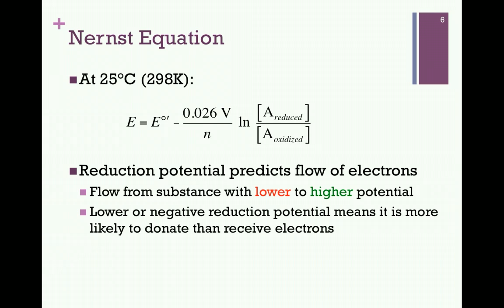If we look more closely at our equation, we see that when the oxidized form predominates, this ratio of reduced to oxidized species becomes less than one, and by taking the natural log of that ratio, we get a negative value. Since this entire quantity is subtracted from that of the standard reduction potential, it means that the actual reduction potential, or E, becomes more positive.